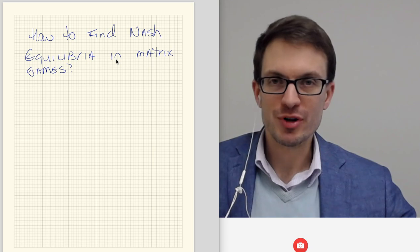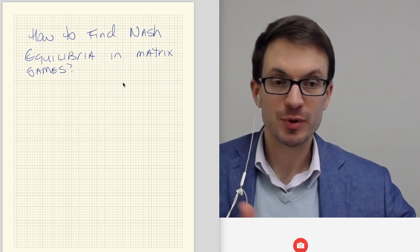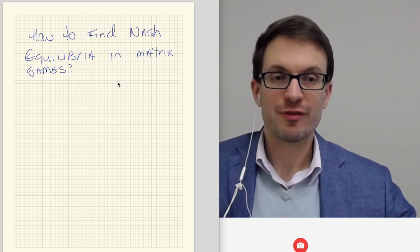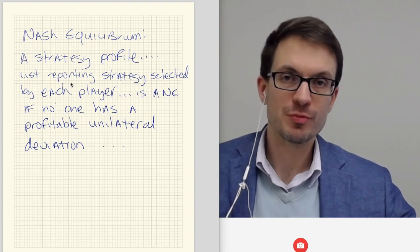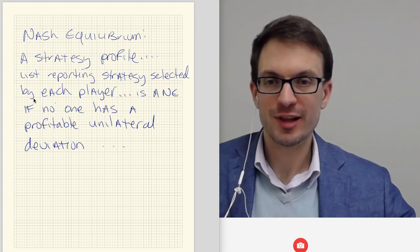So how do we find the Nash Equilibria in these things? Well, first off, as we're starting off with a game, we have players, we have strategies or actions, and we have payoffs. And then to find a Nash Equilibrium, we are looking for a strategy profile, which is a list that reports the strategy actually selected by each player.